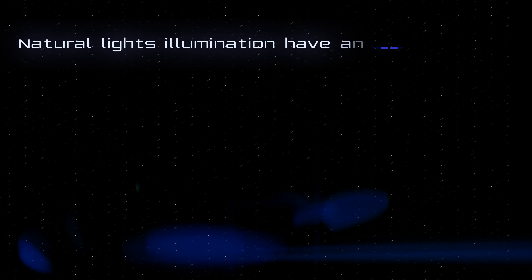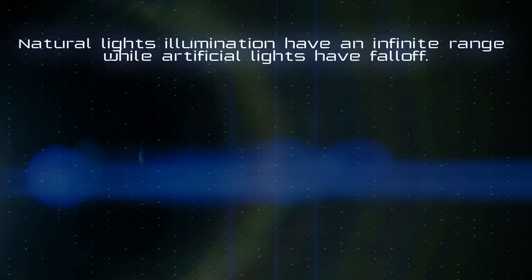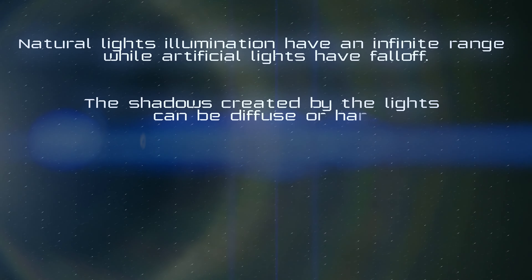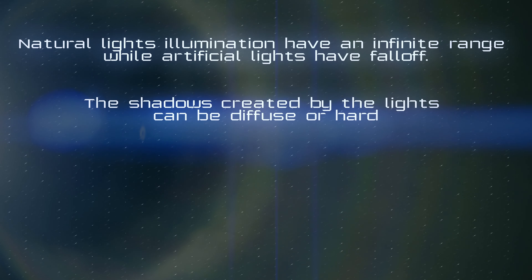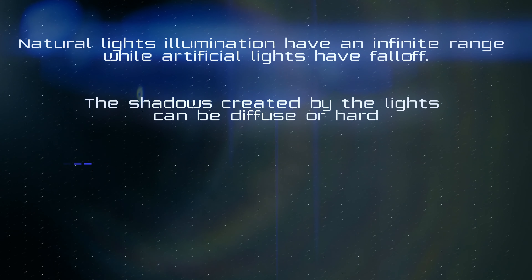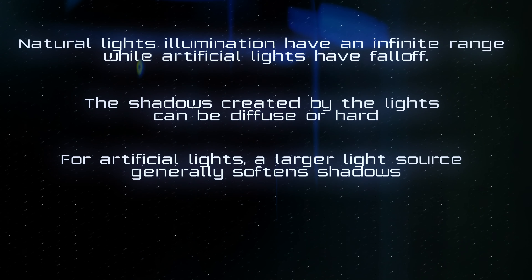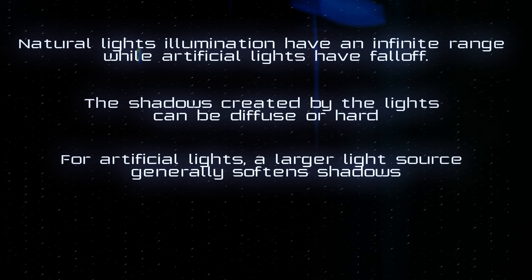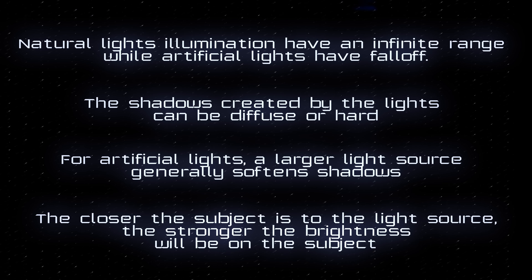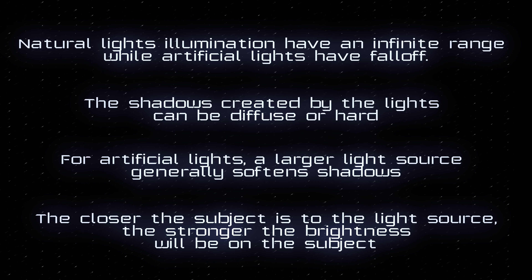Let's recap. What to remember from all this theory? First, natural light illumination has an infinite range while artificial lights have fall-off. Two, the shadows created by the lights can be diffuse or hard. Three, for artificial lights, a larger light source generally softens shadows. And number four, the closer the subject is to the light source, the stronger the brightness will be on the subject.